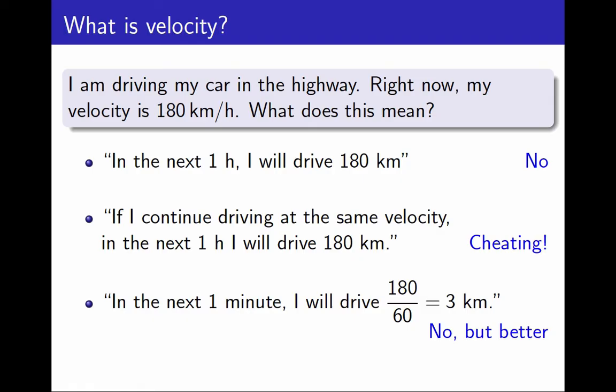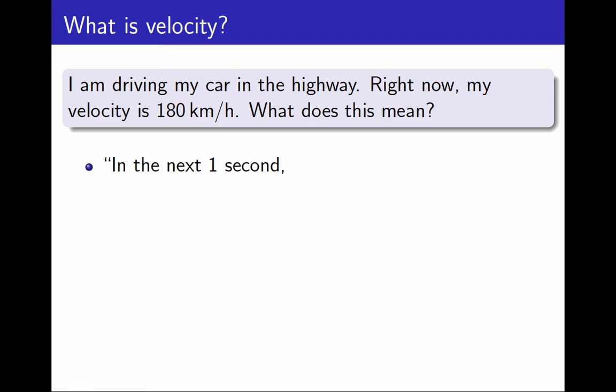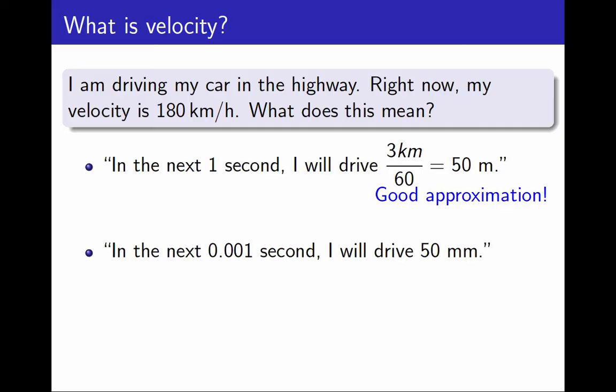And now I see what to do. Let's take an even smaller time interval. In the next second, I expect I will drive 3 km divided by 60, which is 50 m. This is still not exactly true, but it is a pretty good approximation. It is very close to being true. And in the next millisecond, I expect I will drive 50 mm. This is even better. While it is still only an approximation, for all practical purposes, I can pretend it is true.